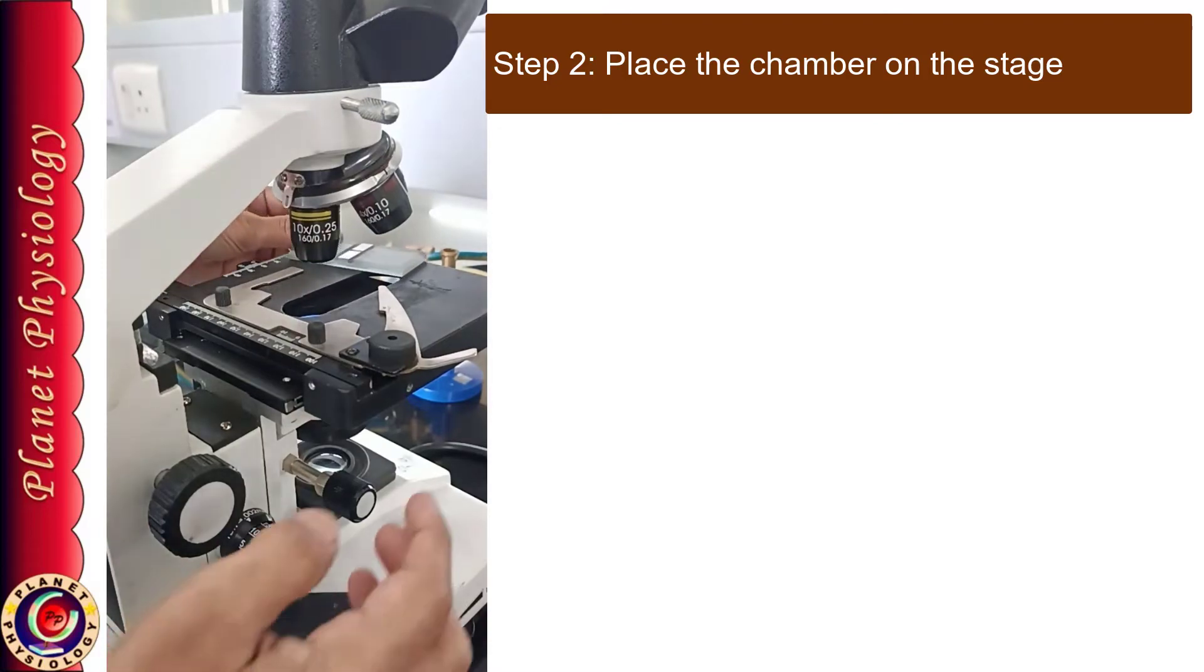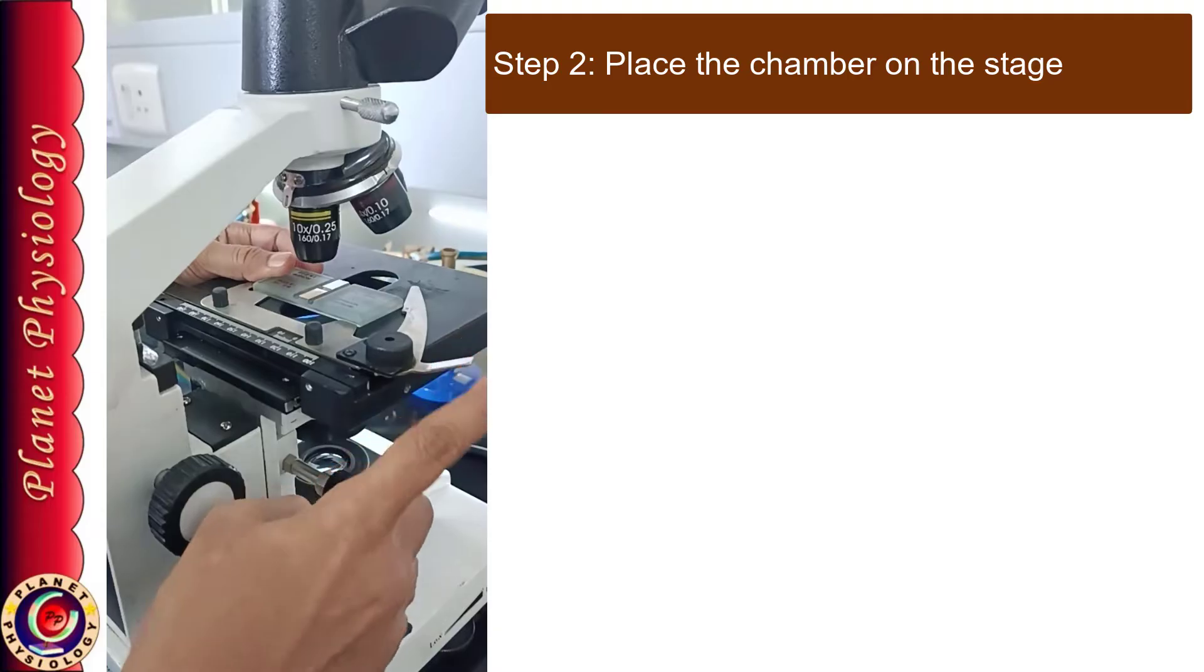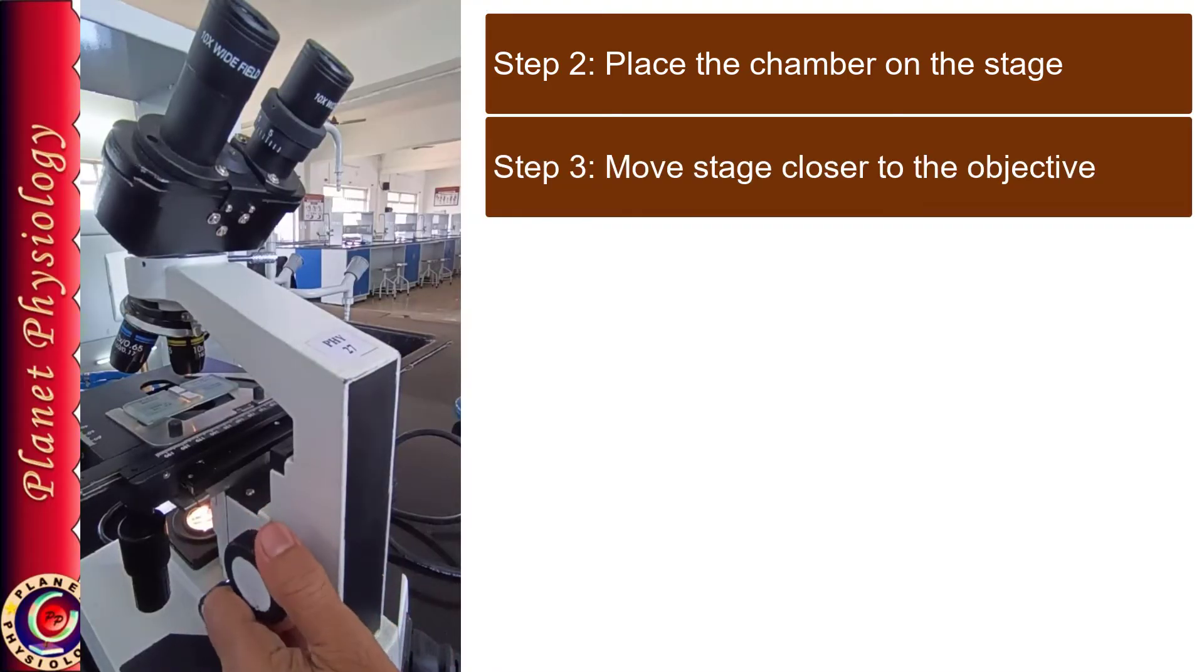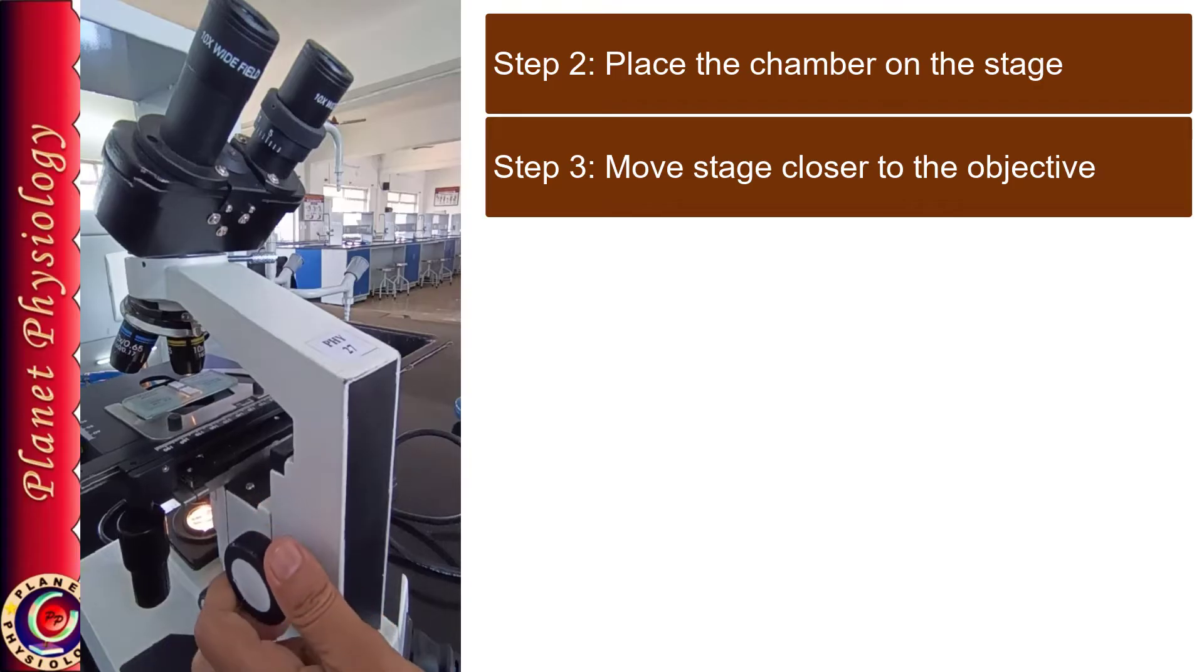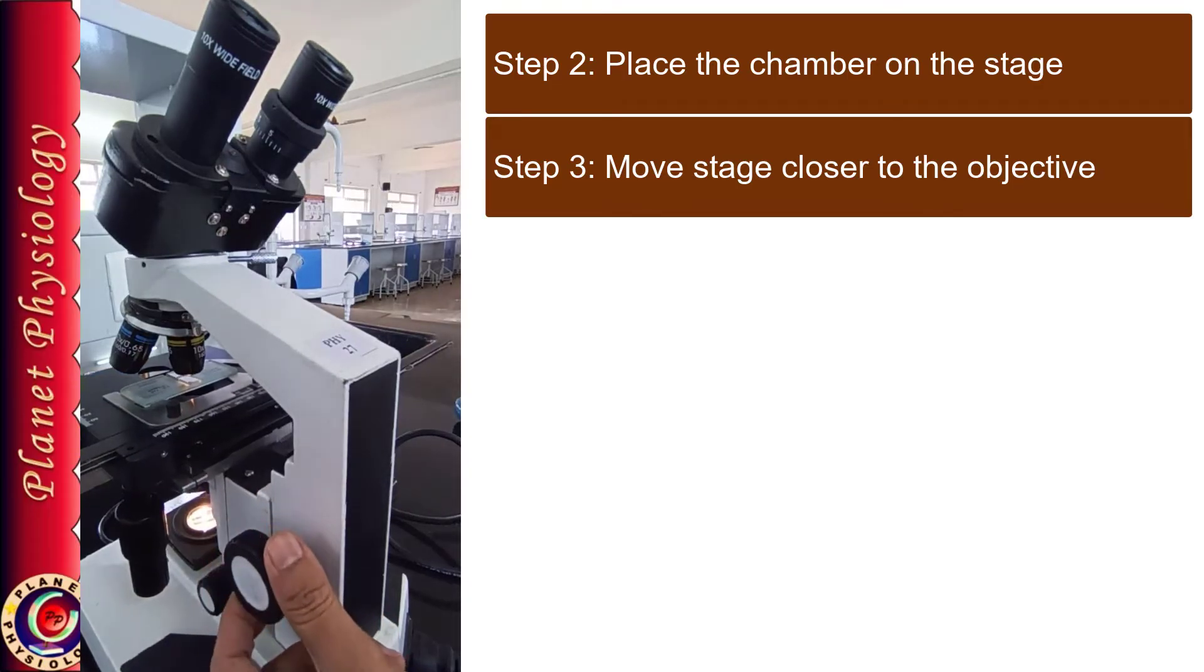Now place the chamber on the stage. Make sure that it is fitting properly in the mechanical stage. Now move the stage closer to the objective by viewing it from side. Don't hit against the objective but move closer to the objective.